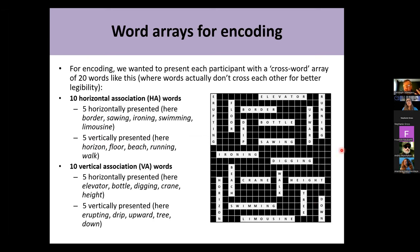The idea was to take these words and present them to participants in a crossword-like arrangement — though not real crosswords, since the words don't touch or cross each other, for better legibility. Each participant saw 10 horizontal association words and 10 vertical association words from the pool, with five of each category presented horizontally and five presented vertically. 20 words was our estimate of the maximum number of words people would be able to recall after a distractor task.